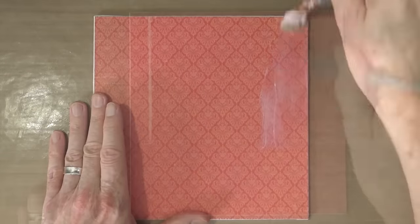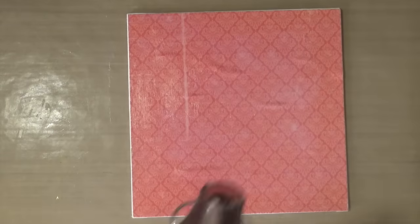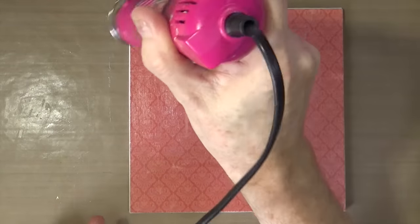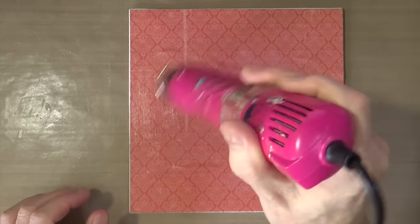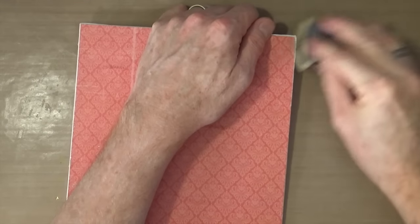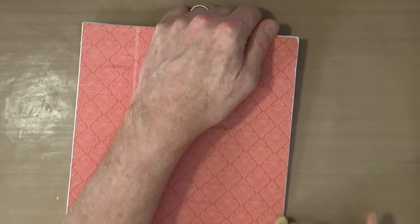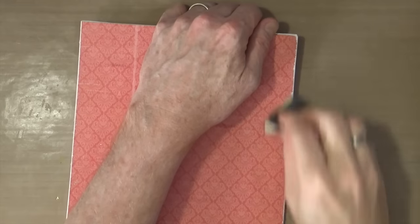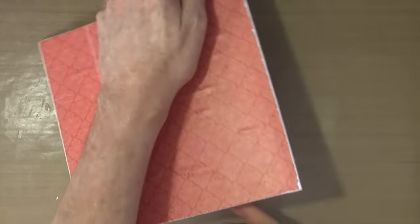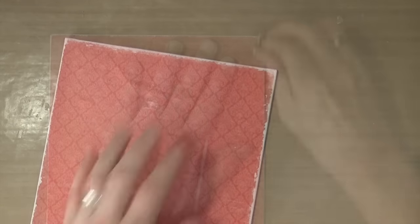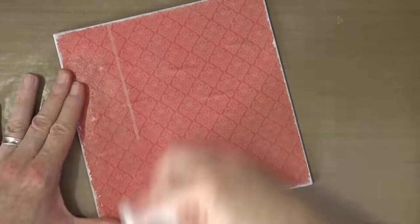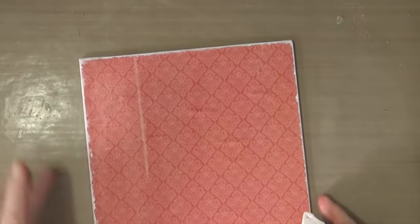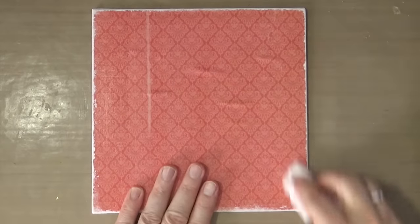Once it's all stuck down, I'm just going to give the entire top a coating just to seal all the print in. Any of those bubbles that you can see will flatten out once it's dried completely, just like wallpaper. I'm taking a foam sanding block and sanding the edges to expose the paper underneath, then wiping off any excess paper dust with a wet wipe.